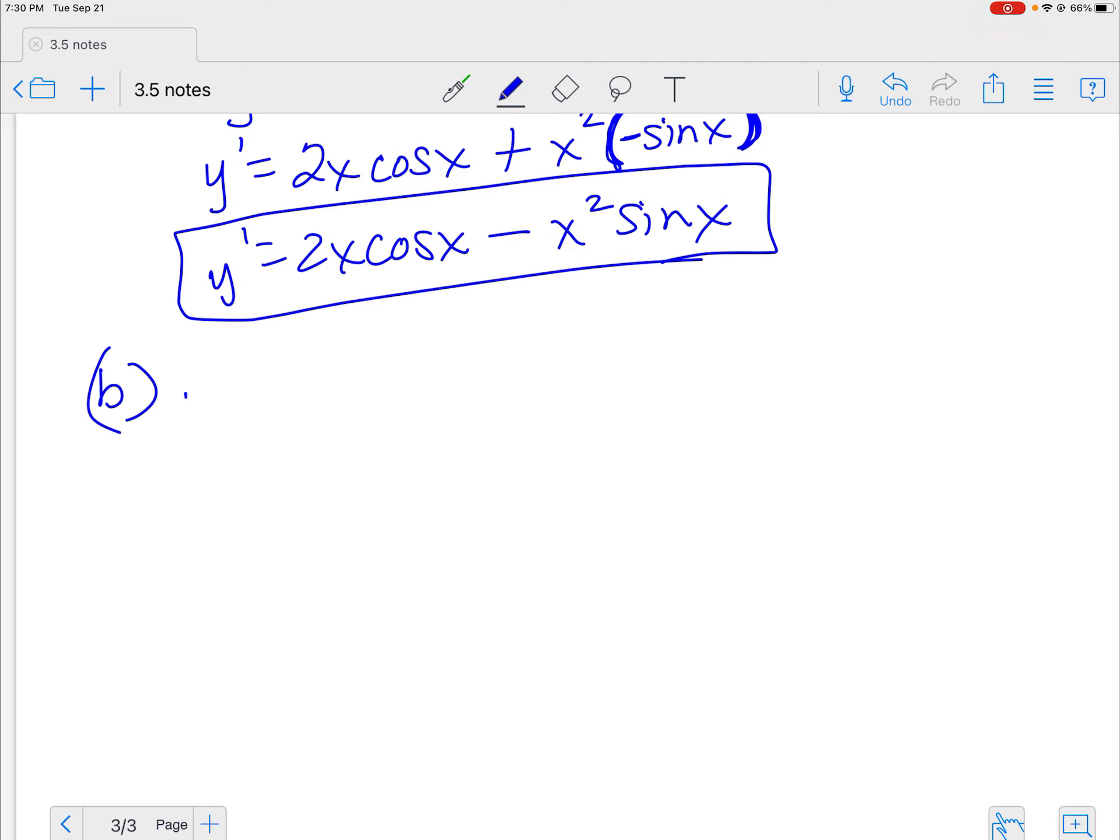So I have y is equal to the sine of x minus x cosine x. Now we're getting fancy, right? So the derivative of sine we know, but what's happening with this second little bit here? Good. It's a function times a function. So you're going to have to do the product rule with that second term.